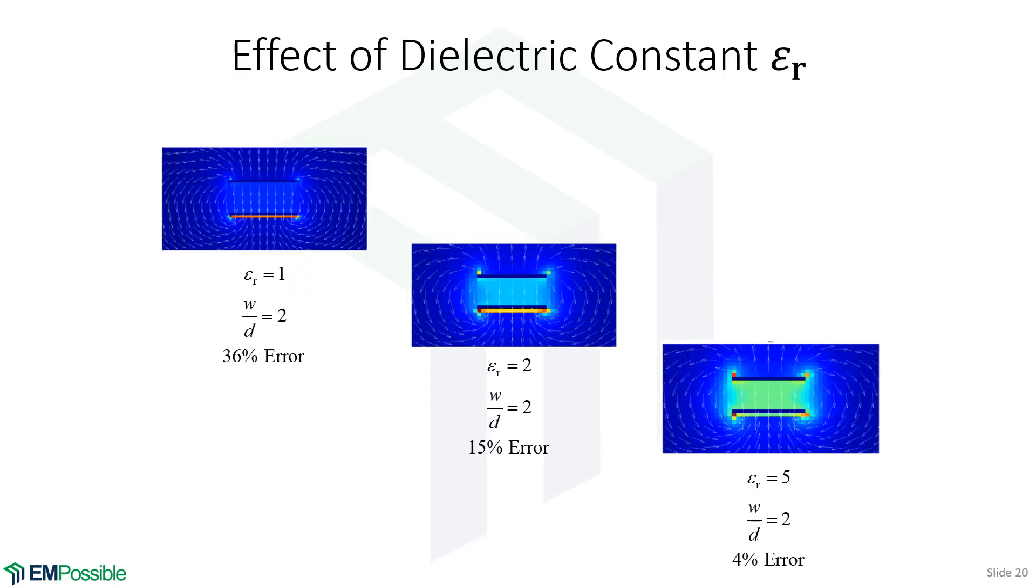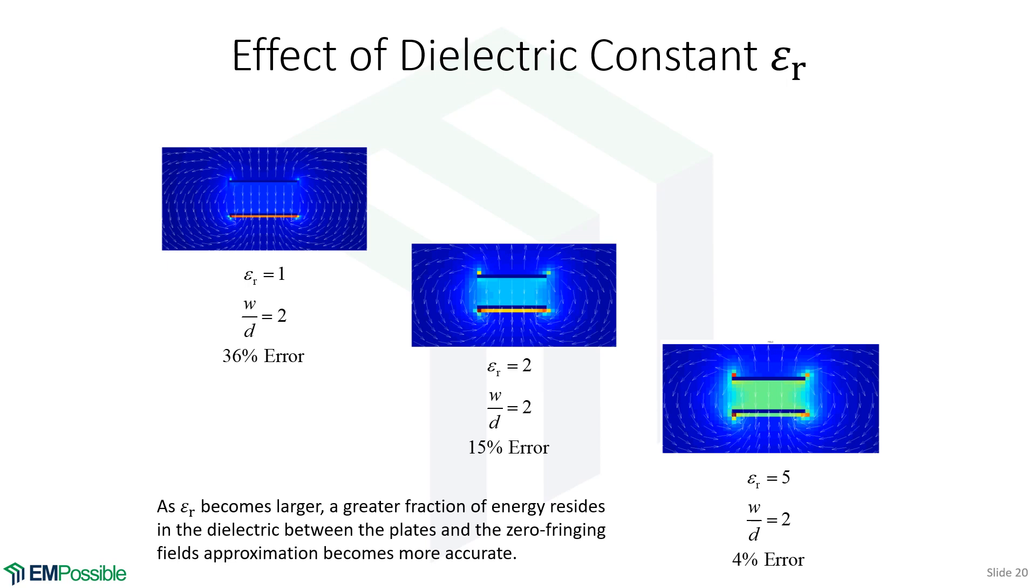One more trend, what if we increase the dielectric constant? So we start with air, then we go up to two and we go up to five. But otherwise, the capacitor remains the same. And what we see is that as the dielectric constant goes up, the fraction of error goes down. Now, why is that? That's because when we put a higher dielectric constant between the plates, the field, the energy, prefers to be in the higher dielectric constant medium. So as we increase that permittivity, the energy of the field moves into that. So there's just a higher fraction of energy between the plates, which is something that we're capturing in the closed form analysis.